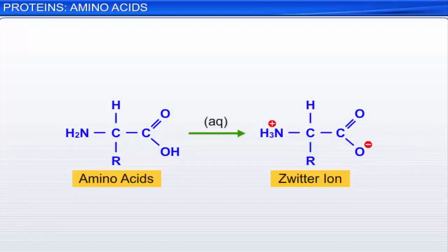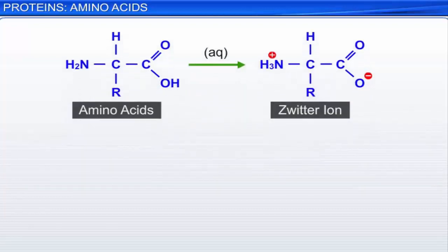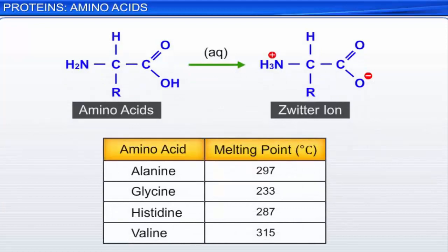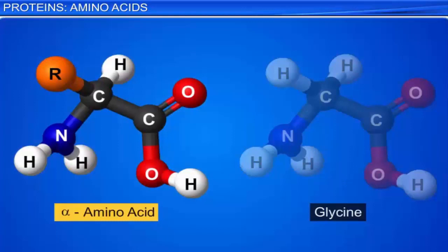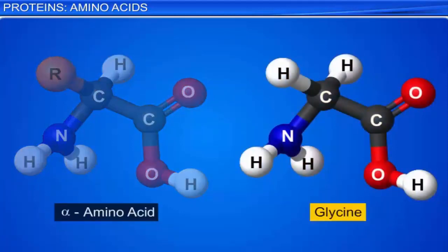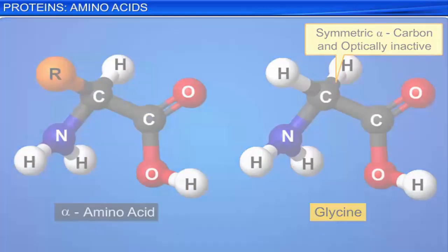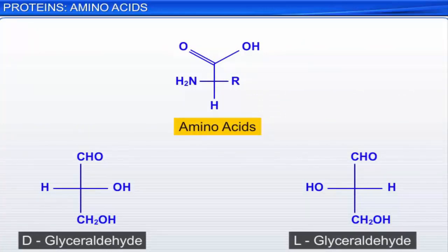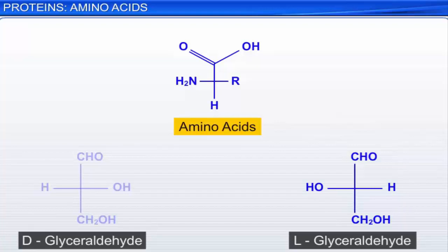The high melting points and solubility of most amino acids are due to this dipolar ion structure. All alpha or naturally occurring amino acids, with the exception of glycine, are optically active due to the presence of an asymmetric alpha carbon. Glycine does not have an asymmetric carbon and is therefore not optically active. All amino acids except glycine are chemically correlated to levorotatory glyceraldehyde with L-configuration. Hence, amino acids have the L-configuration. Notice that in L-configuration, the amino group is drawn on the left.